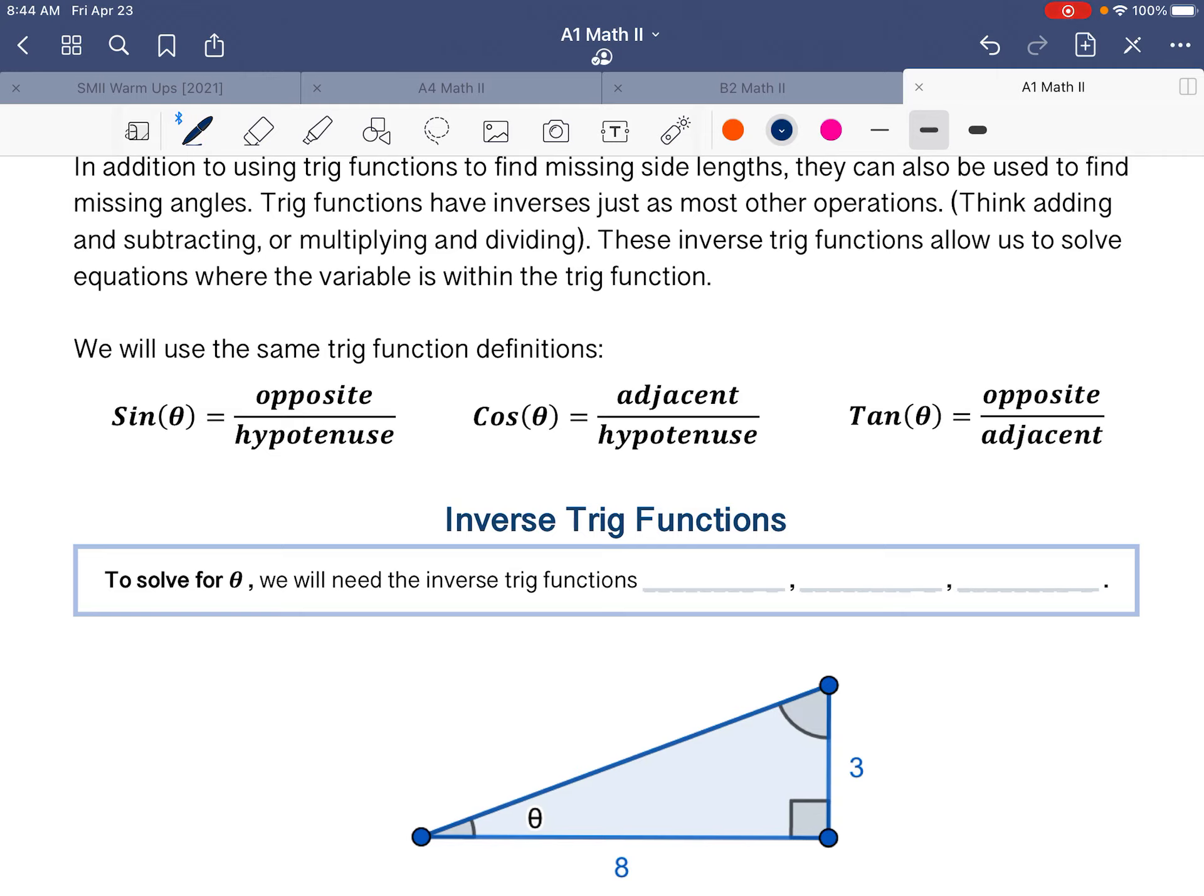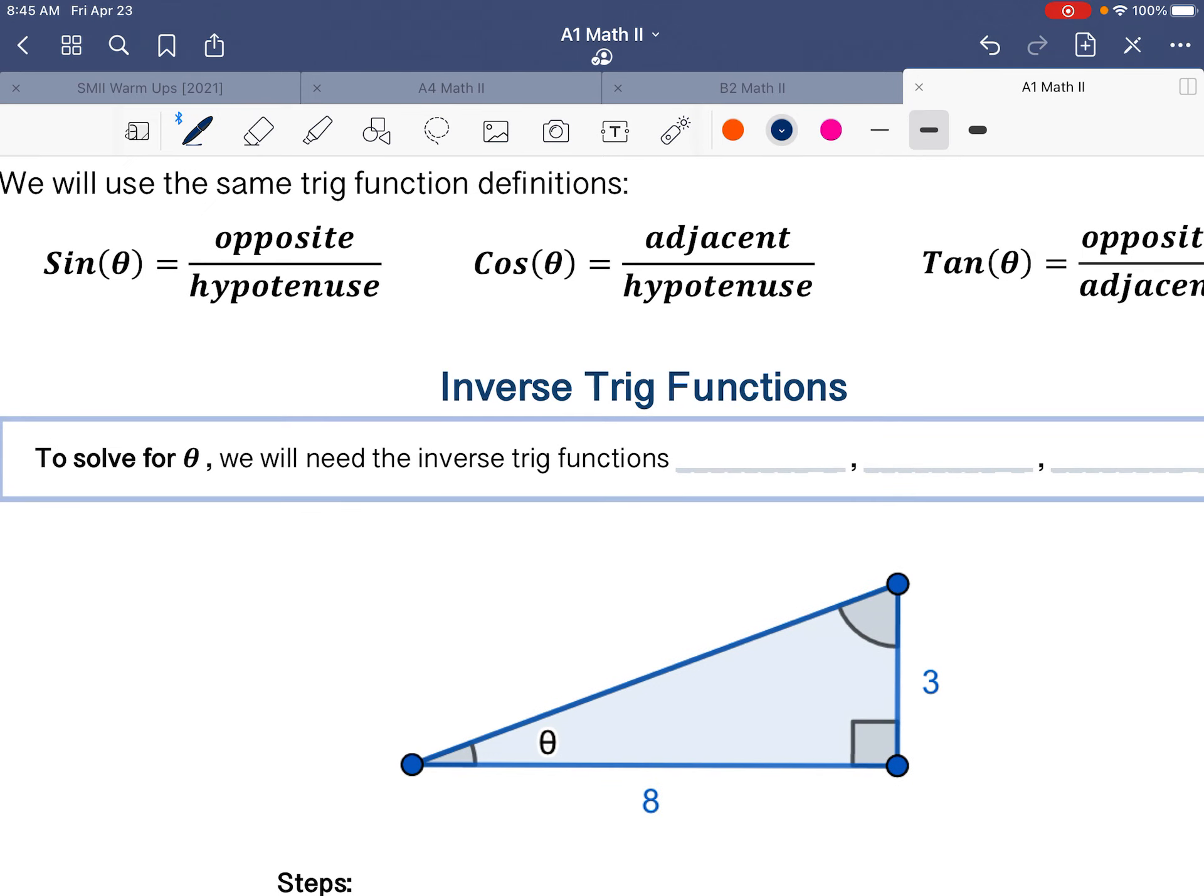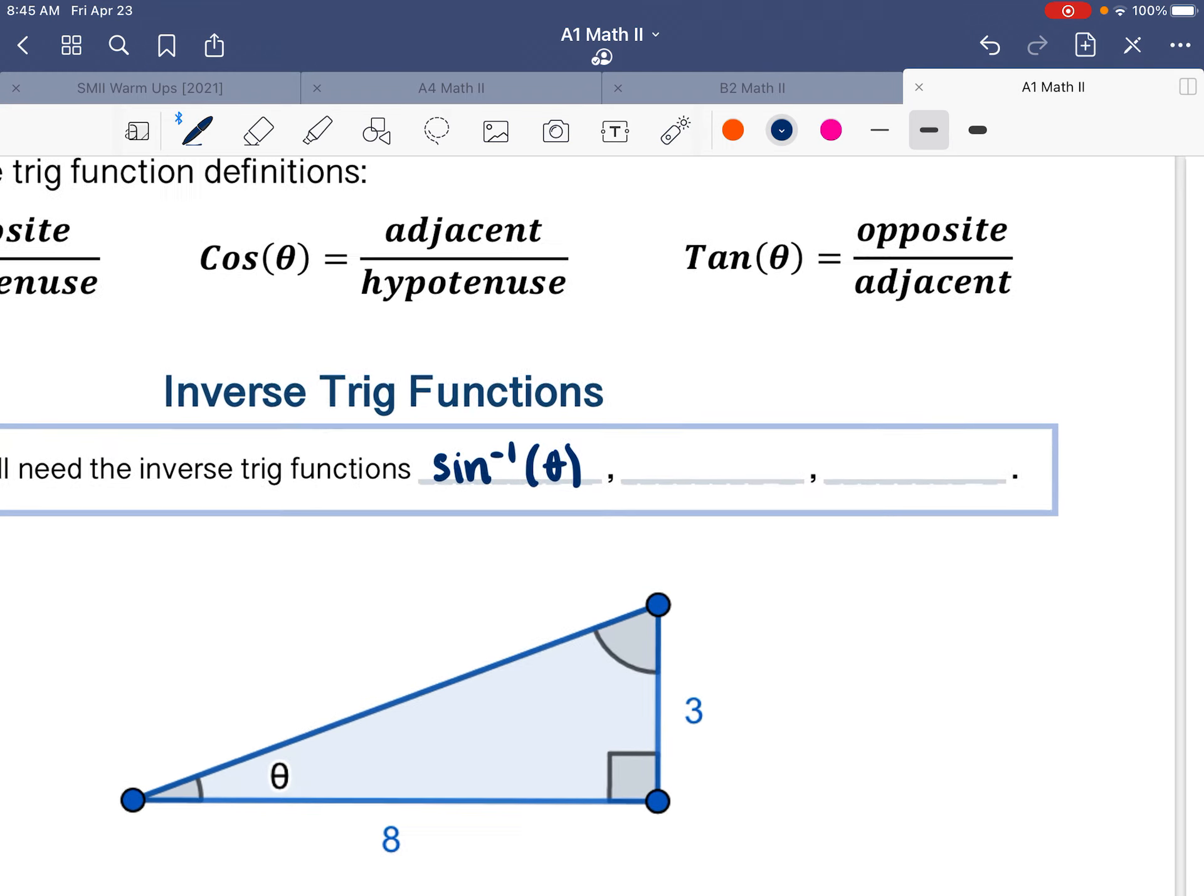Just like multiplying and dividing are opposite, adding and subtracting are opposite, each of these trig functions have essentially undo functions. And we just call them sine inverse, cosine inverse. They're written with a little negative 1 power, but we just say sine inverse.